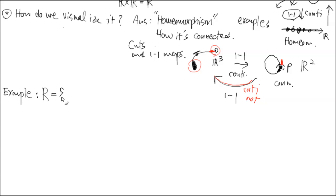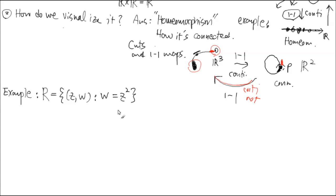The Riemann surface R is now given by the pair (Z, W) where Z and W are complex variables — two complex variables — satisfying a simple equation. If it were real, the equation W equals Z squared would give a parabola. Z is a kind of horizontal variable. Since it's complex, the question is: is it possible to map it down in a one-to-one fashion?